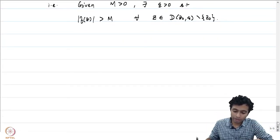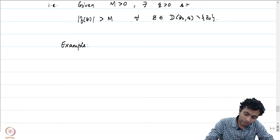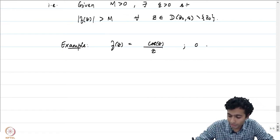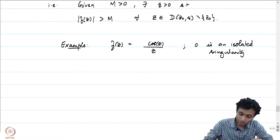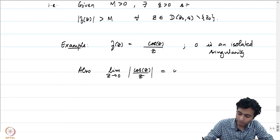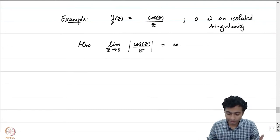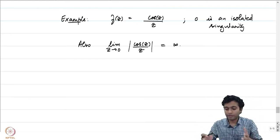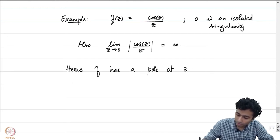Let us revisit the examples from the last lecture. Consider f(z) = cos(z)/z. Remember that 0 was an isolated singularity. We noticed that the limit as z goes to 0 of |cos(z)/z| blows up. That is precisely how we had eliminated this as a removable singularity — it was not a removable singularity because the limit should have existed. But this is exactly the situation which tells us that the function f has a pole at 0, i.e., f has a pole at z₀ = 0.